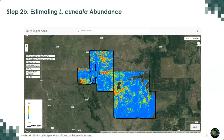We did the same thing for our other functional traits as well. After doing all of this, we used the functional trait layers to detect Lespedeza cuneata presence using classification. Classification is a very common approach in remote sensing: we give input data to a classifier, train it, and it labels the pixels — in this case as Lespedeza cuneata present or absent. We repeated this classification hundreds of times and came up with a probability map showing the probability of Lespedeza cuneata presence. Red pixels are regions with high probability of presence; blue pixels are areas with low probability.